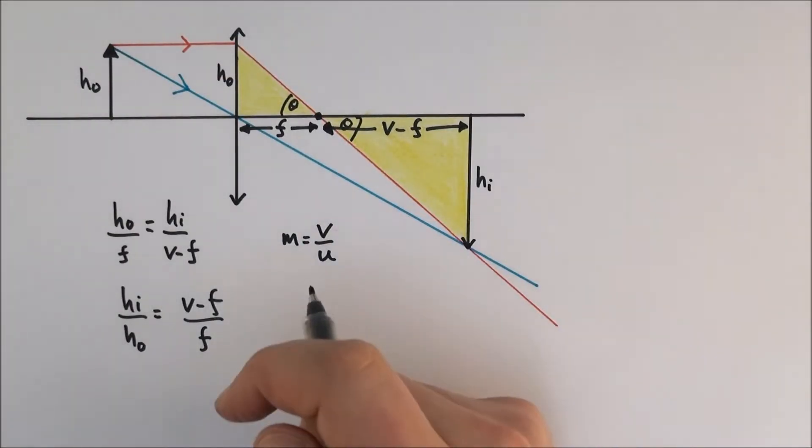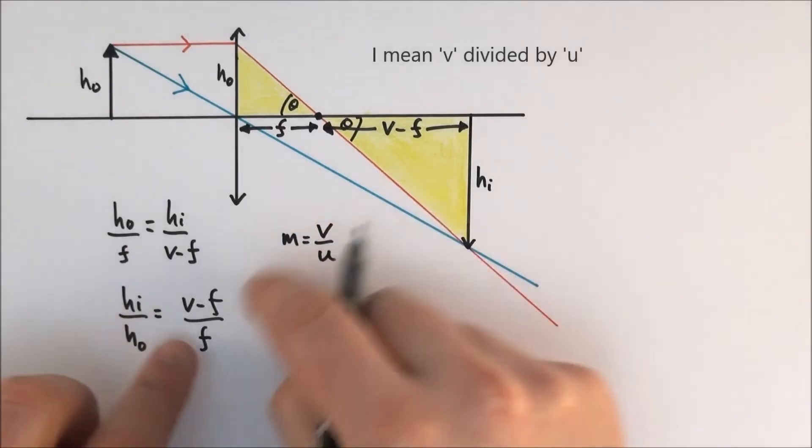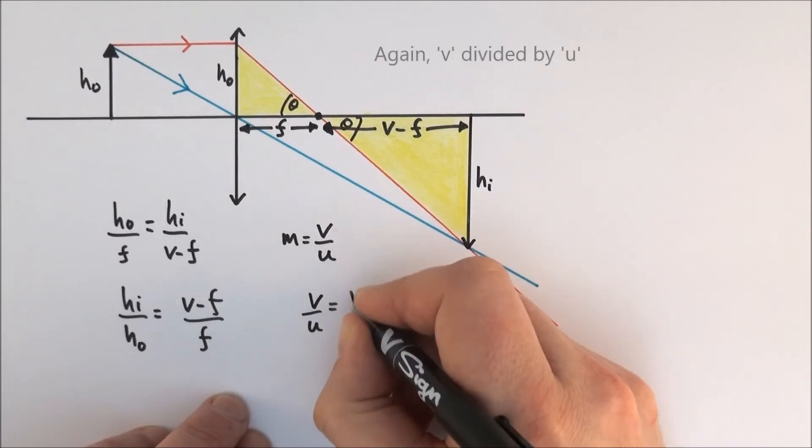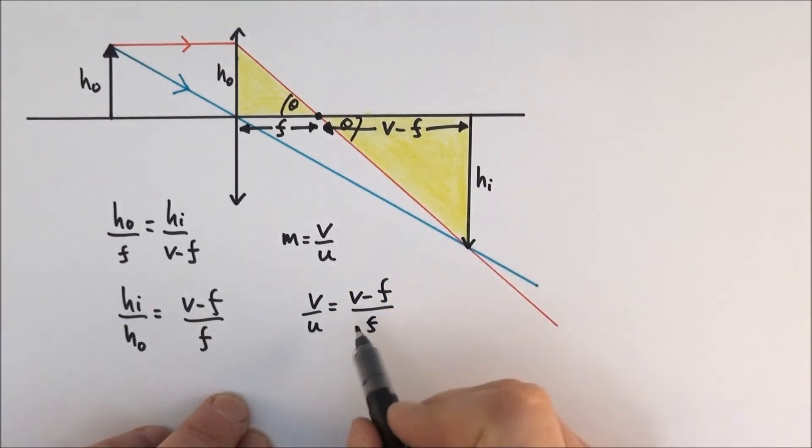So what I can then do is basically say that if this is our magnification which is v over u, we can therefore say that combining these two things we can say that v over u is equal to v minus f divided by f. What I can then do is separate this out and say that v divided by u is equal to v over f minus f divided by f and f divided by f is just equal to 1.